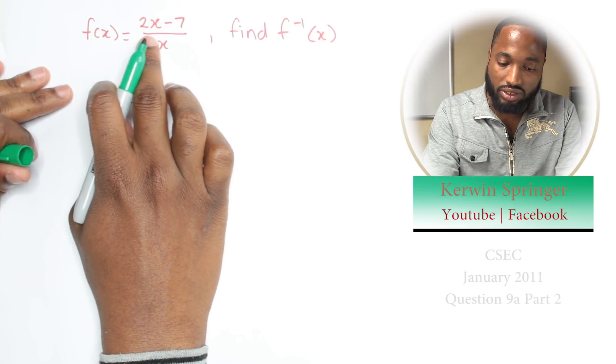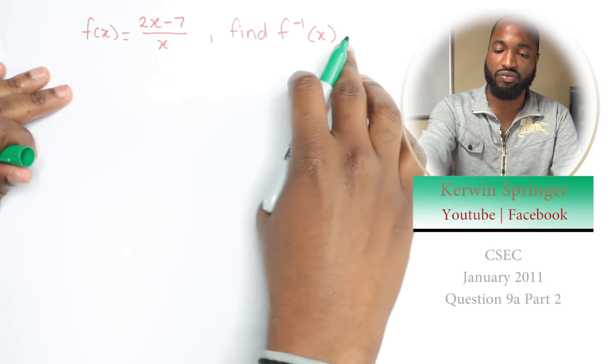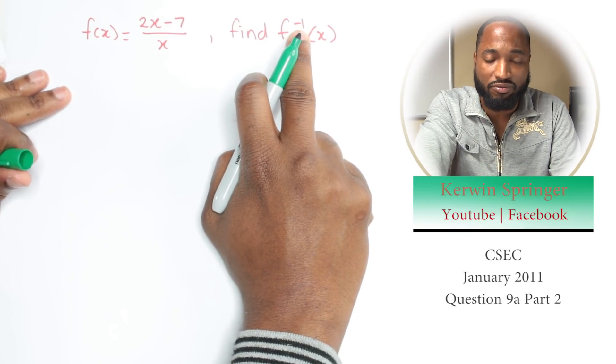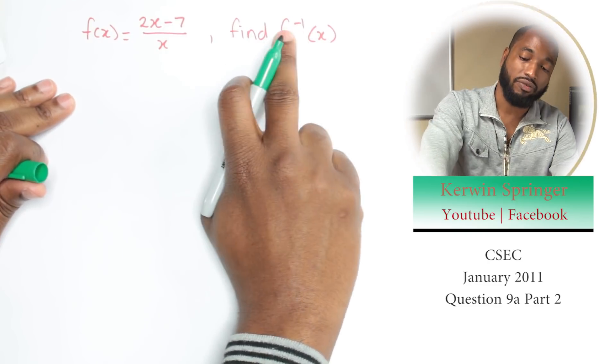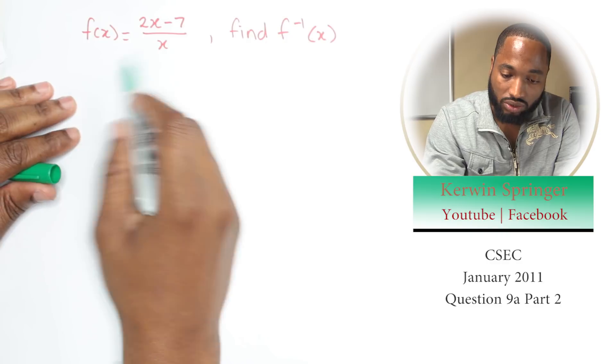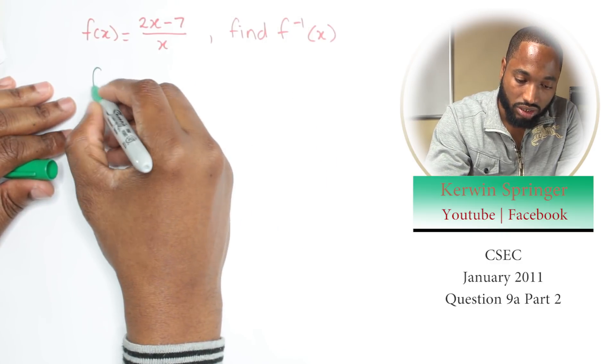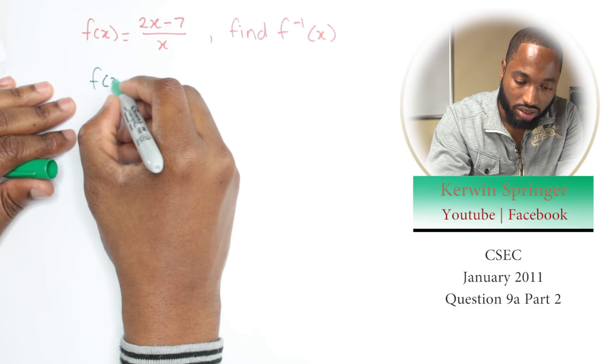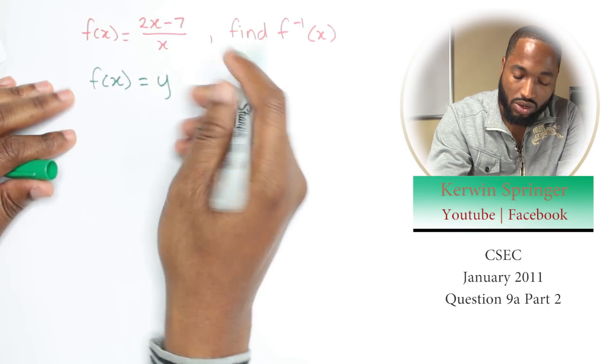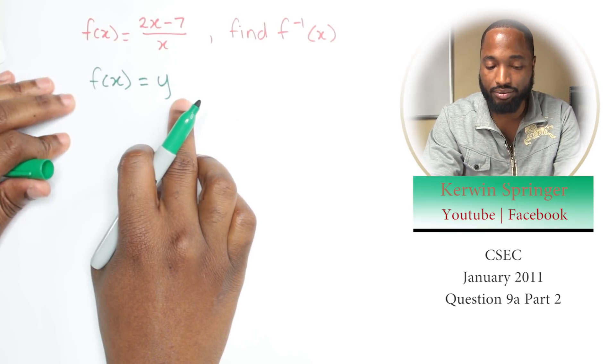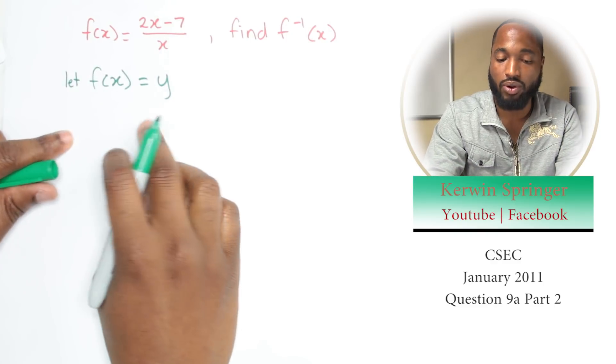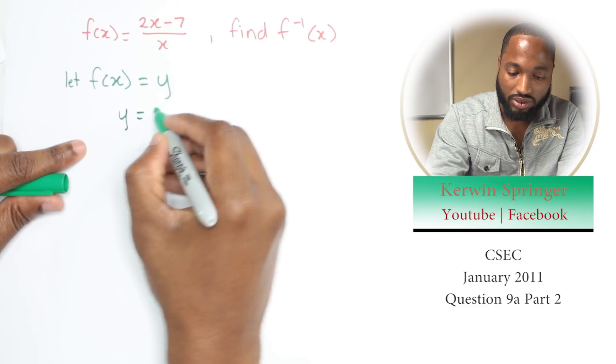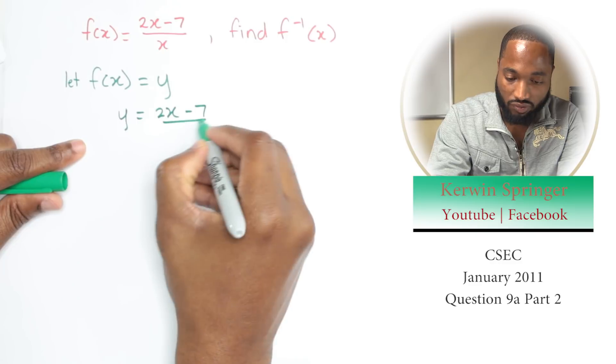Alright, f(x) is equal to (2x - 7)/x. Find f inverse of x. This is the symbol for inverse, f inverse of x. Okay, so let's do this. We're going to let f(x) equal y. So write this: y is equal to (2x - 7)/x. That's the first step.